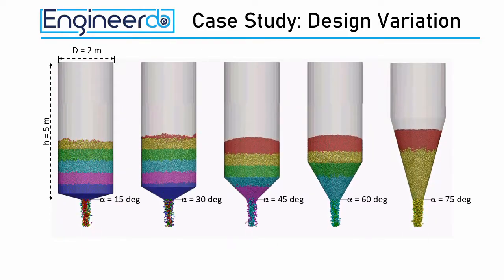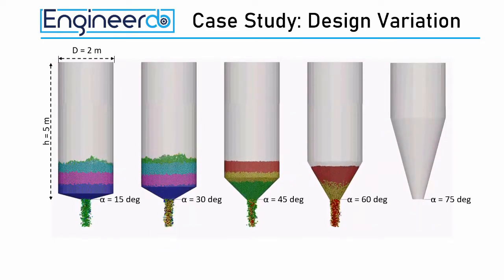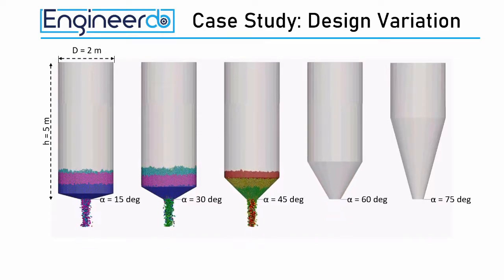When we speed up the simulation you can see that the mass flow rate also depends on the silo design. The right mass flow silo design results in a greater mass flow rate compared to the other silo designs.